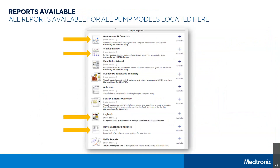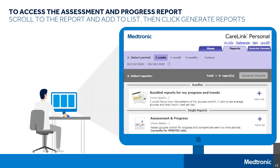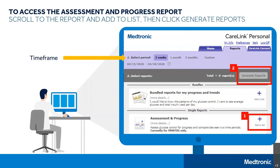The four highlighted here are the reports that we will be taking a deep dive into today. Once you have selected the Reports tab, select the report you want to review by clicking Add to List, and then select the Generate Reports button as shown on this page. You can generate reports by timeframe — for example, by weeks or by months as shown at the top, or you can customize to a specific timeframe.